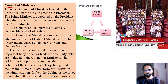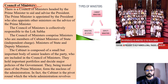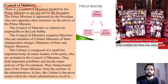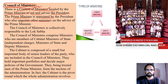Now let us understand the council of ministers — the team that helps the prime minister. The Constitution provides for a council of ministers headed by the prime minister to aid and advise the president. The prime minister is appointed by the president, who also appoints the other ministers on the advice of the prime minister. The prime minister selects his team and gives that list to the president.